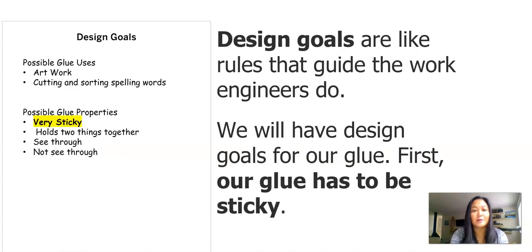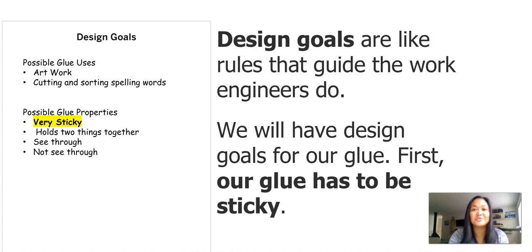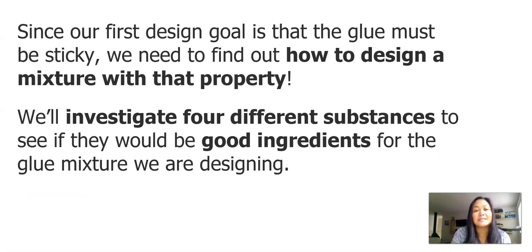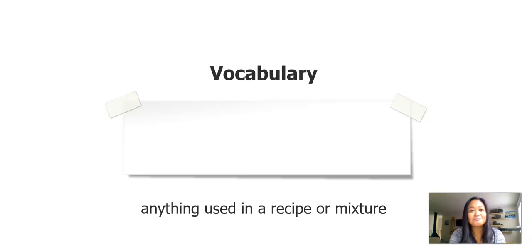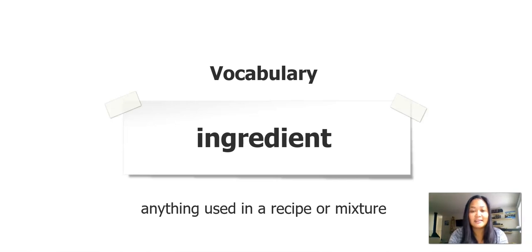Here are the other glue properties that we observed. Remember that design goals are like rules that guide the work engineers do. We will have design goals for our glue — first, our glue has to be sticky. Since our first design goal is that the glue must be sticky, we need to find out how to design a mixture with that property. We'll investigate four different substances to see if they would be good ingredients for the glue mixture we are designing. Now we're coming to a new vocabulary word: ingredient — anything used in a recipe or a mixture. Think about what ingredients you use to make cookies, mac and cheese, or trail mix.